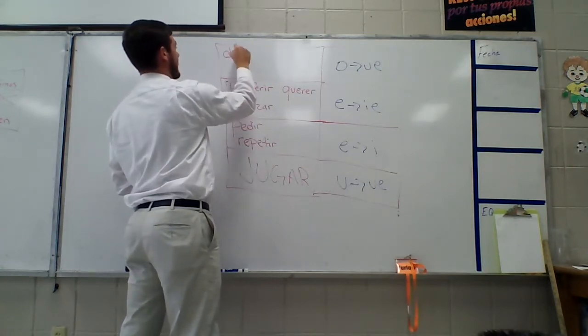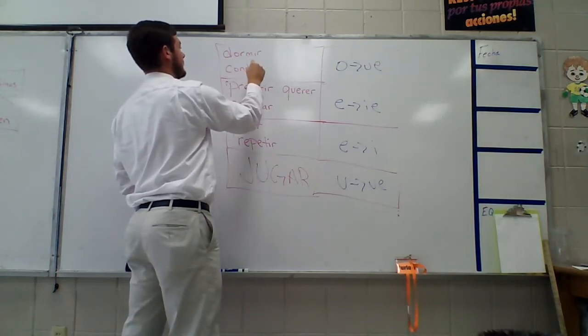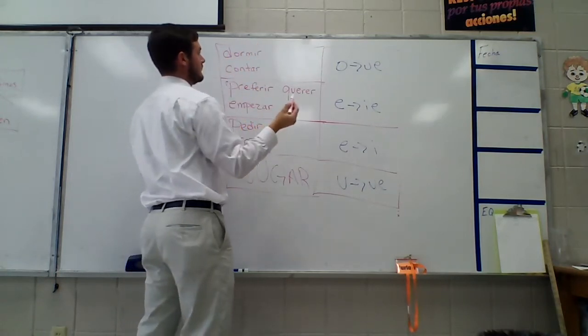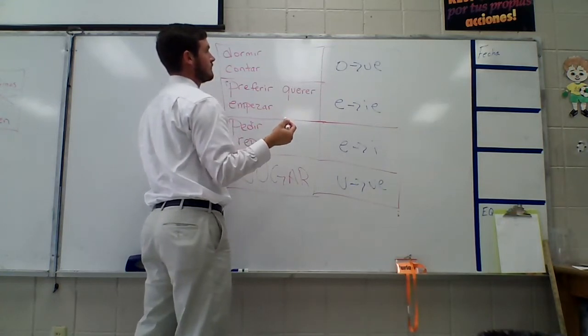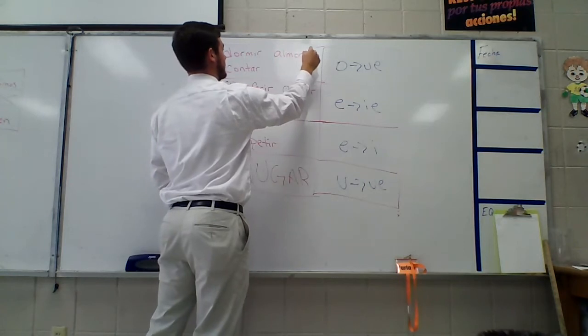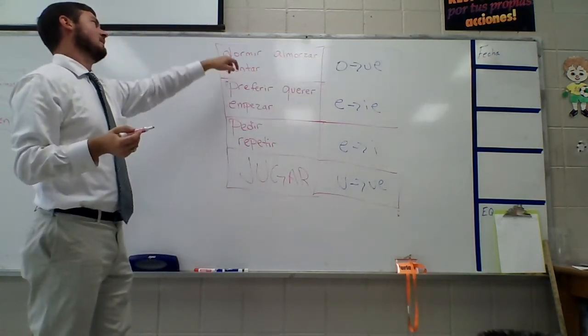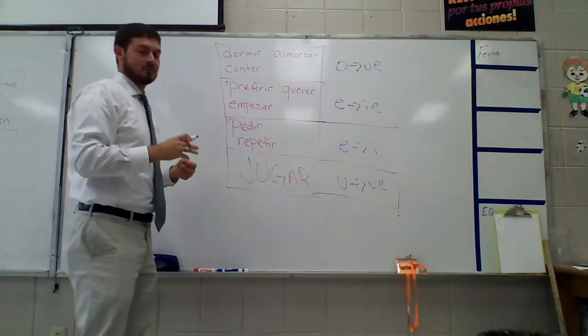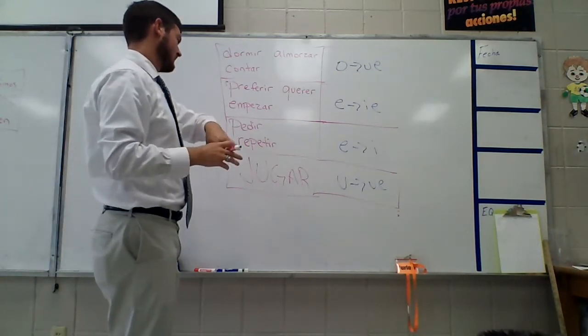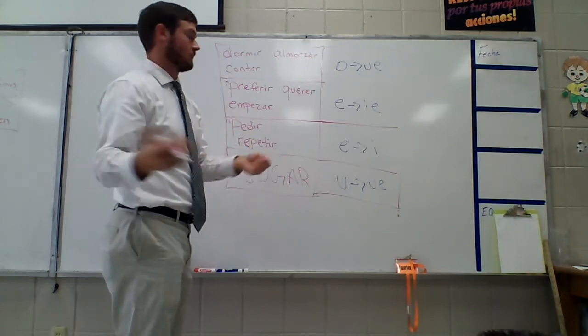O to U-E, of course, we've got dormir, the one we just did. You've got contar. And then you've got almorzar. Almorzar is to eat lunch. Contar is to count. Dormir is to sleep. And let me get one more to put here. And then those will be the ones that you're going to be responsible for for the quiz on Friday.